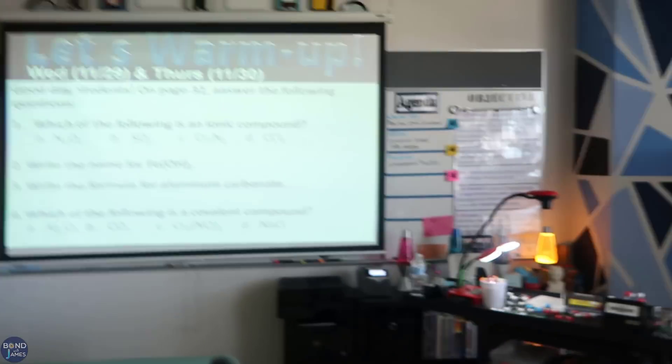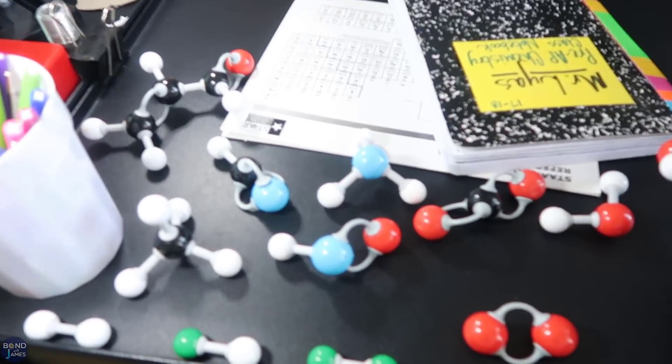The last period of the day is getting ready to start. Fourth period, I have the warm-up up and ready to go. I also have my molecular models for the notes because we're going to take notes over covalent compounds, and I'm also showing them how to draw Lewis dot structures. I know we just started that, but some of the students from first and second period need a little more help distinguishing between ionic and covalent compounds, and also writing formulas for ionic compounds.